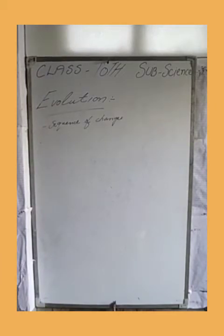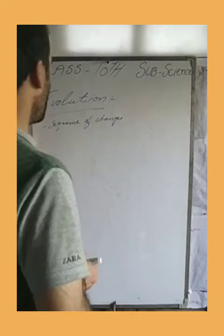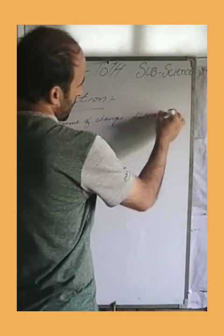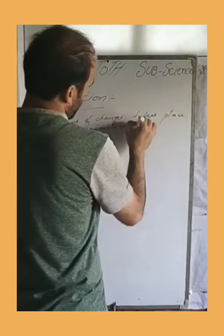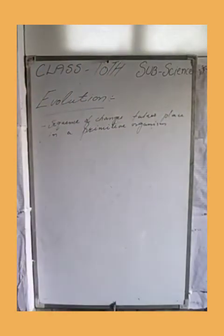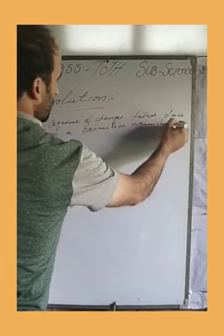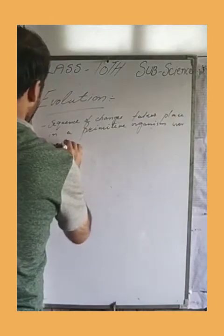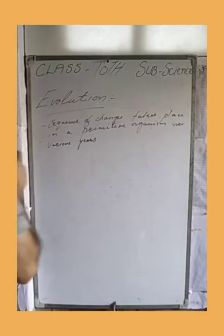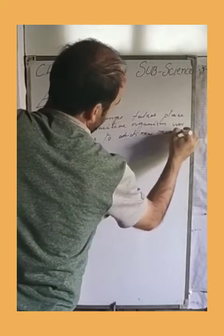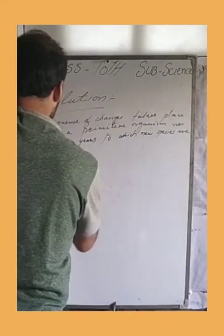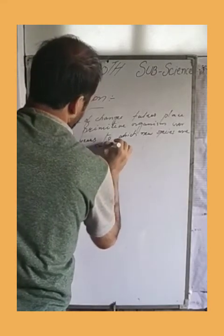Today's topic is evolution. So what is evolution? Evolution actually shows us the sequence of changes that takes place in a primitive organism over millions of years, through which new species are formed. This is called evolution.